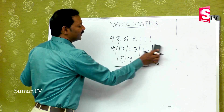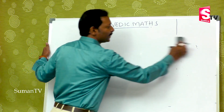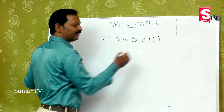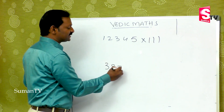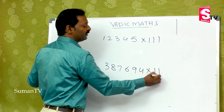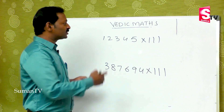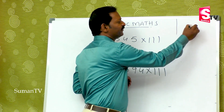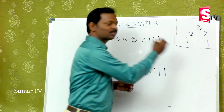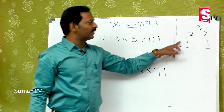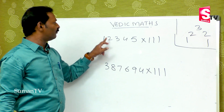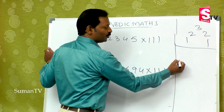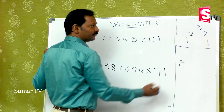Just as we did a bigger number with 11, now with a bigger number like 1, 2, 3, 4, 5 multiplied by 111. Or consider 3, 8, 7, 6, 9, 4 multiplied by 11. First is 1, 1 plus 2 that is 3, 1 plus 2 plus 3 that is 6.